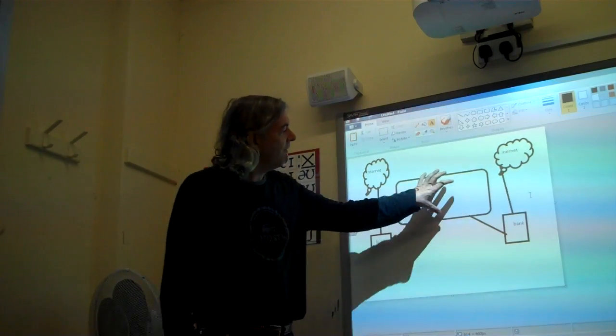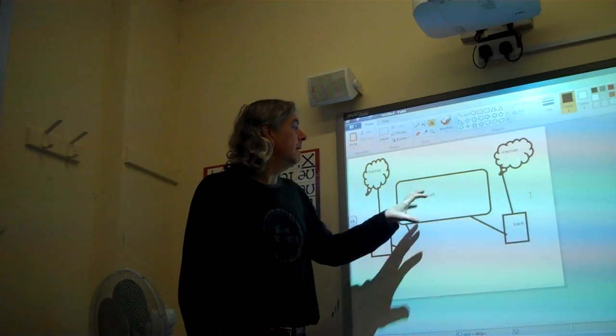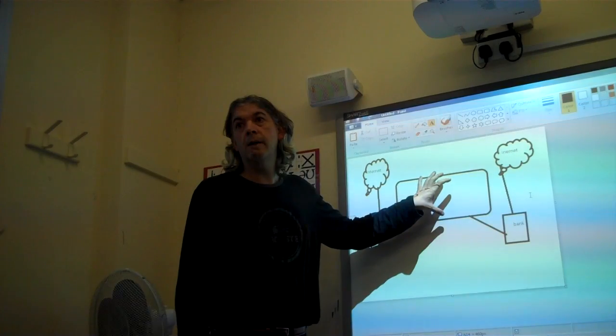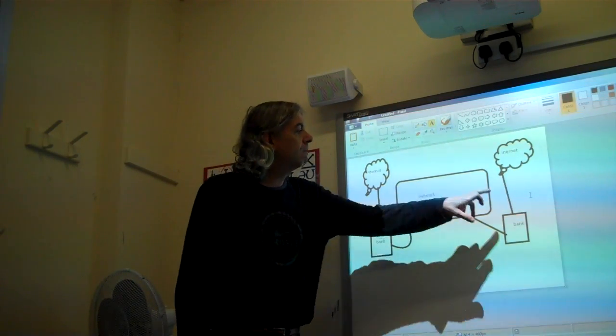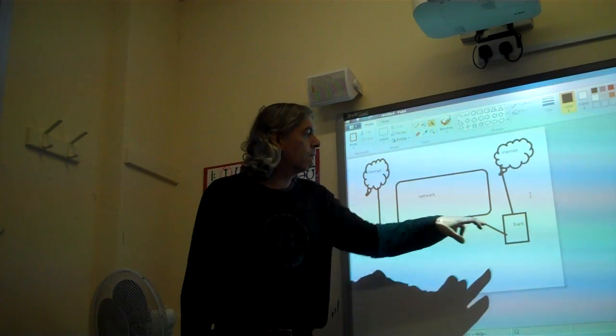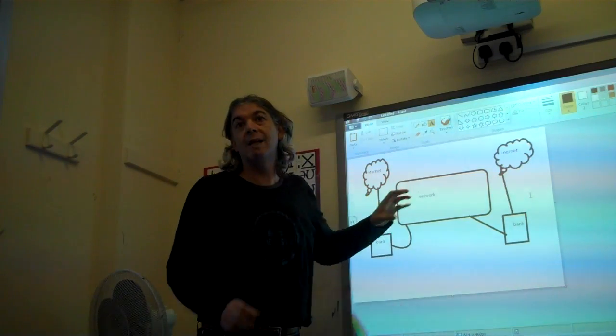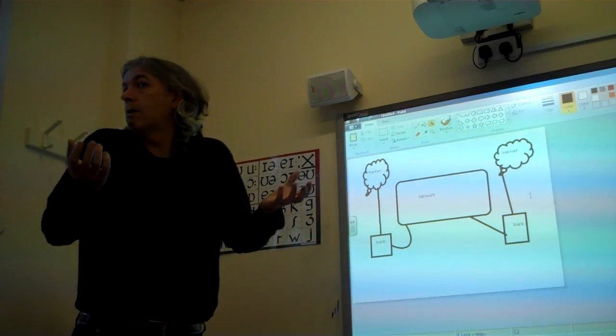First, we have a network. The network is Visa and MasterCard in this moment, and it's a private network. All the transactions and authorizations the banks send or receive is in this private network. The network is worldwide, it's in all the world.